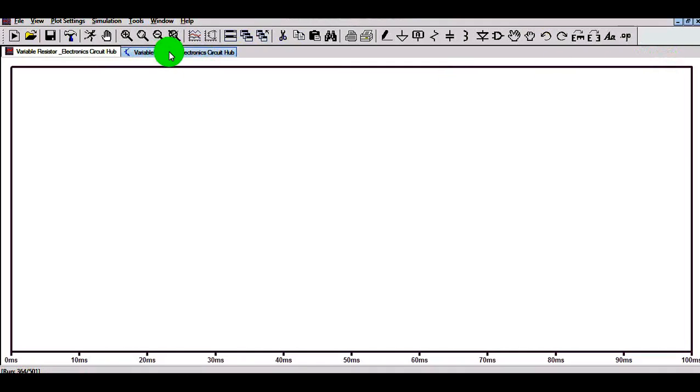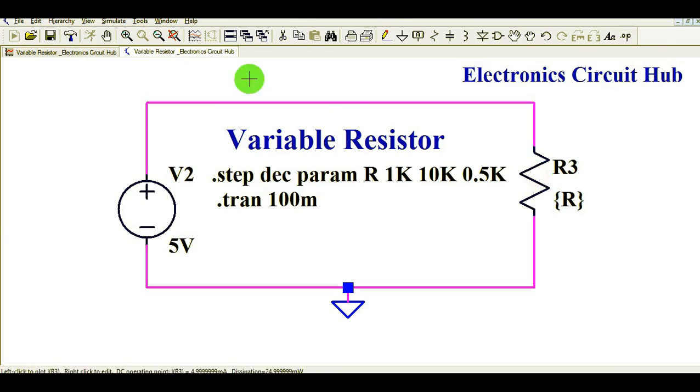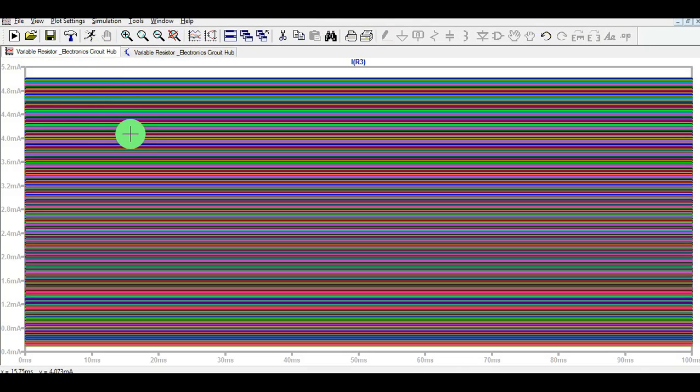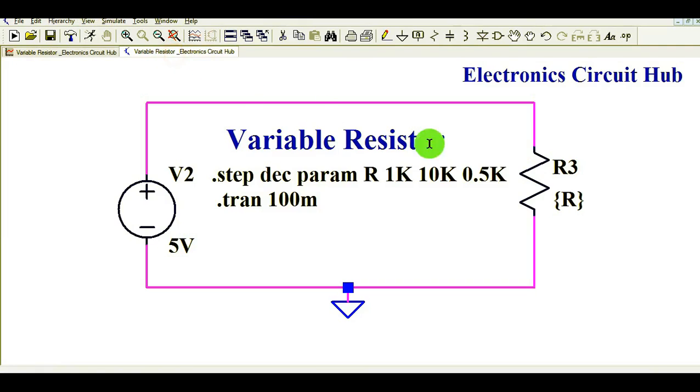So what I will do, I will zoom it here, and now I will show you. Now you can see, your resistance value is changing from 1K to 10K with the step of 0.5K, and you can see here the impact.